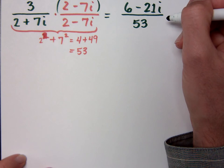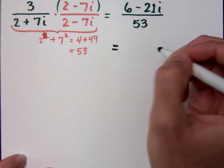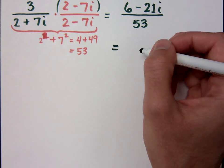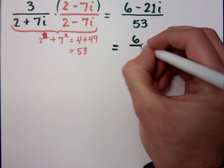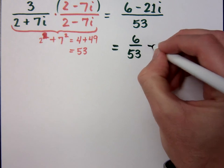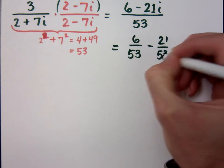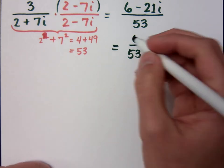When we were writing our answers, you have to write it in standard form. That means the real part, then the imaginary part. So here you want to do what with the fraction? Separate it. Separate it, and it becomes what? 6 over 53. 6 over 53, and then what? Minus 21, 50 thirds, i. That's it.